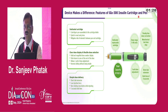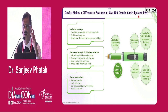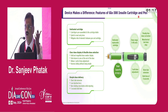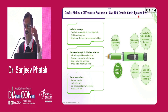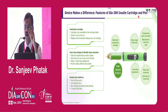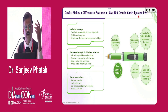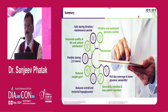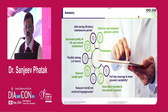The device also makes a difference — the glargine U300 pen contains 450 units for 3 mL, that is 150 units per mL, so it contains more insulin and will last longer. The pen is very user-friendly, and since you inject lower volume due to the higher concentration, the pain may also be less. To summarize: insulin glargine U300 provides effective and sustained glycemic control.